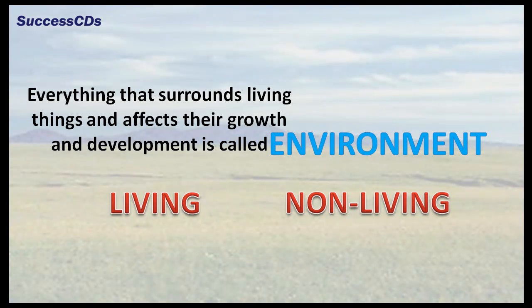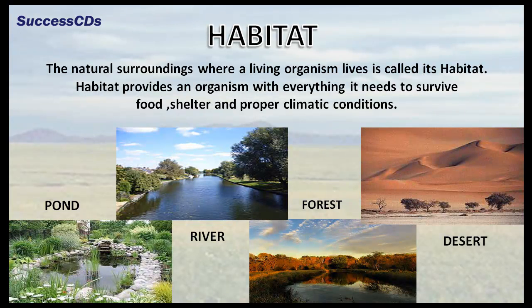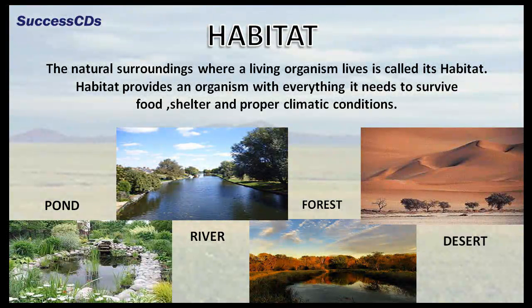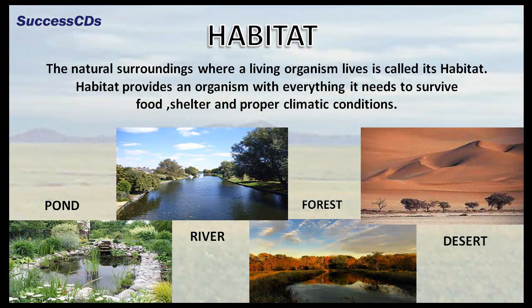Everything that surrounds living things and affects their growth and development is called environment. Both living and non-living things are part of the environment. The natural surroundings where a living organism lives is called its habitat. Habitat provides an organism with everything it needs to survive: food, shelter, and proper climatic conditions.